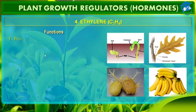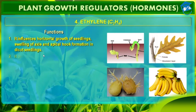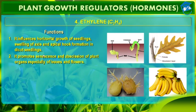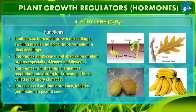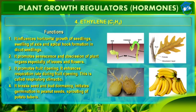So what are the functions of ethylene? Ethylene breaks seed and bud dormancy. It initiates germination in peanut seeds and also initiates sprouting of potato tubers. Ethylene promotes senescence and abscission of plant organs, especially of leaves and flowers. It promotes fruit ripening and enhances the respiration rate during fruit ripening, which we call respiratory climactic.